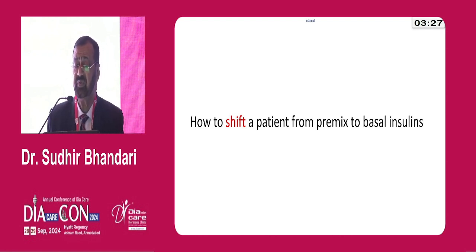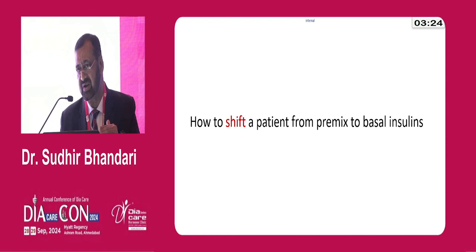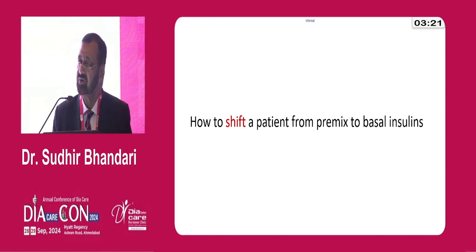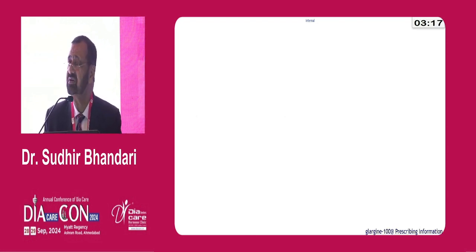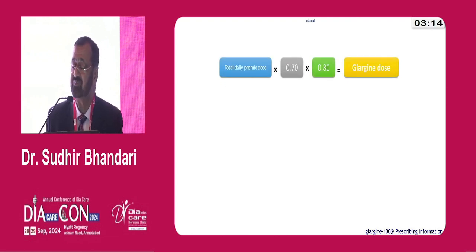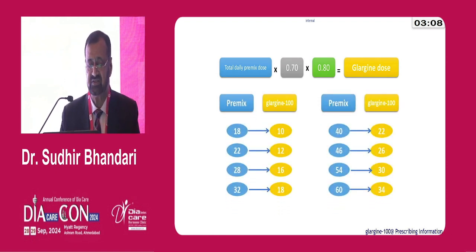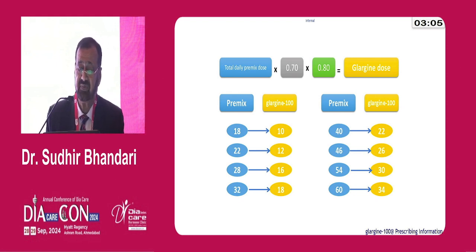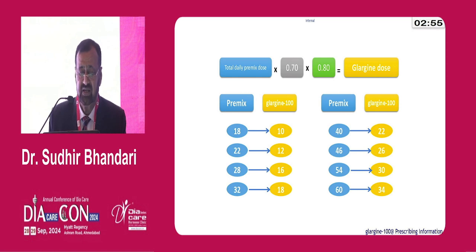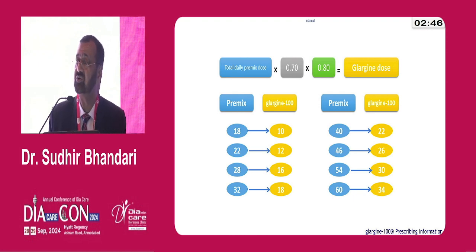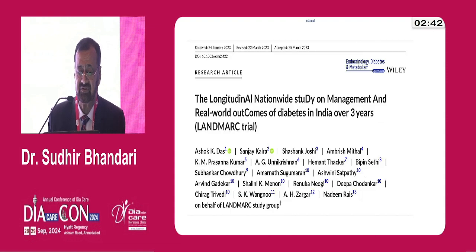How to shift a patient from premix to basal insulin? Because basal offers smoother, more persistent insulin levels with no hypoglycemia and no weight gain. Most of the time when we see patients first, they are on premixed insulin. There is a definite formula: take the daily dose of premix, multiply by 0.7, then multiply by 0.8, and the glargine dose results. For example, a patient on a total premix dose of 80 units multiplied by 0.7 and 0.8 gives approximately 45 units — this is how you calculate the glargine dose, which needs to be given at a fixed time each day.